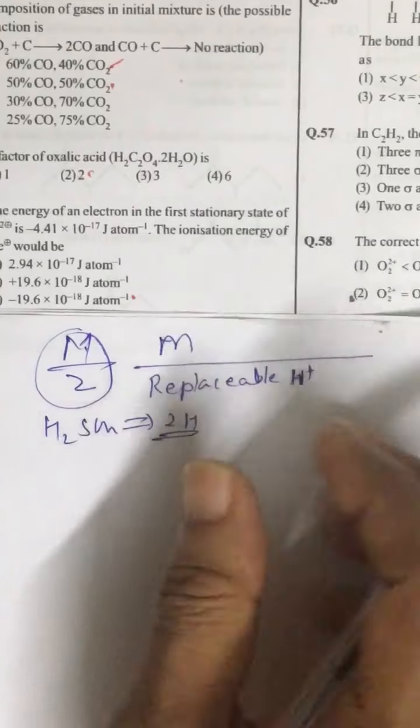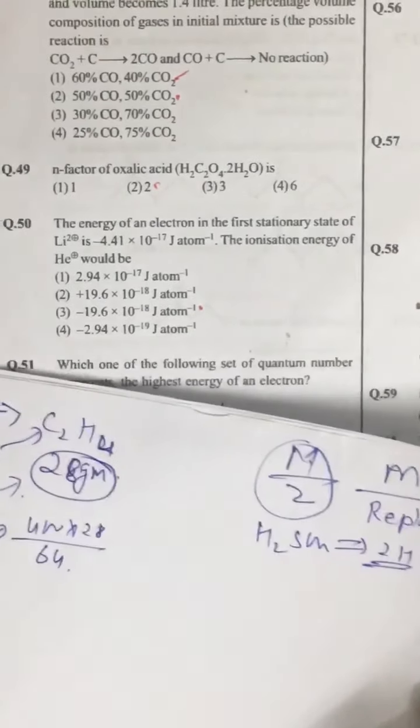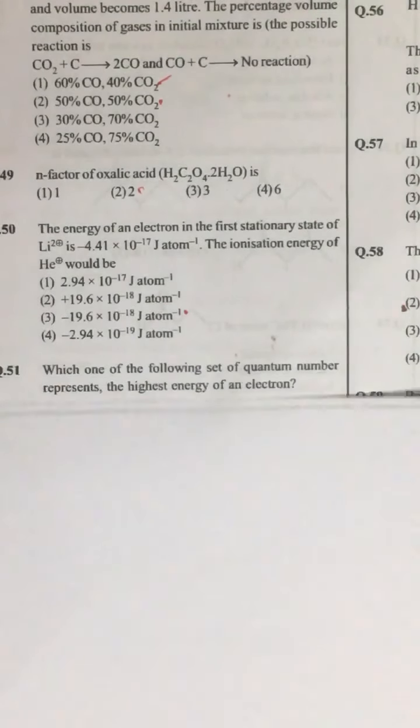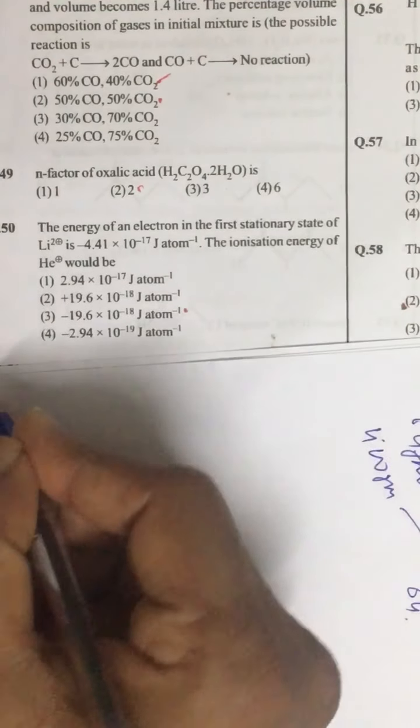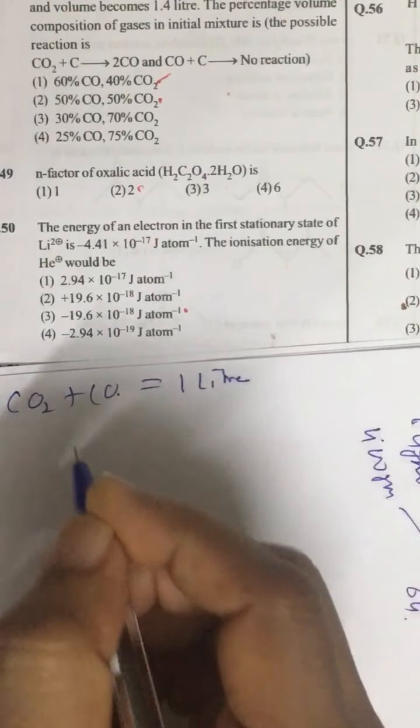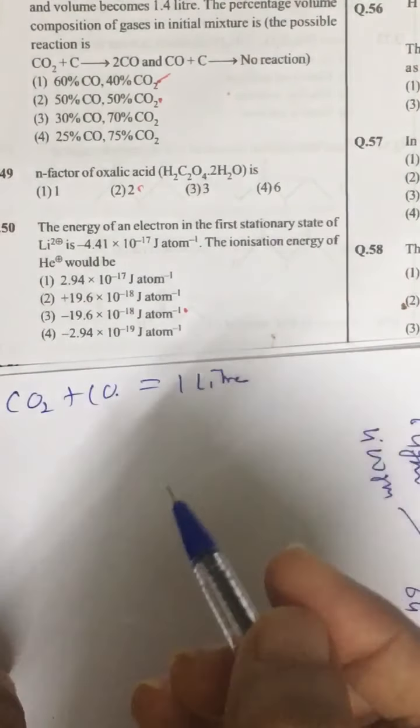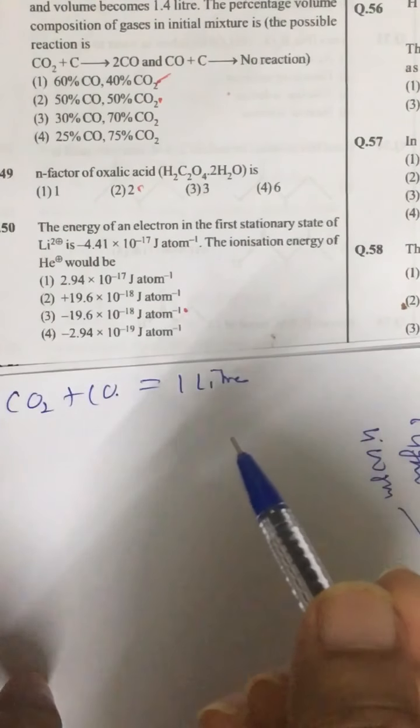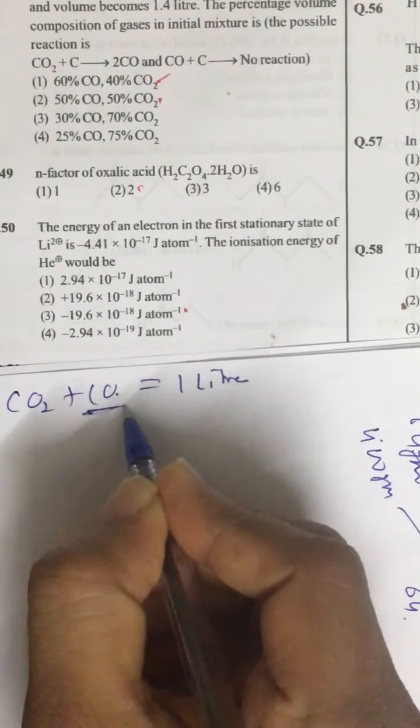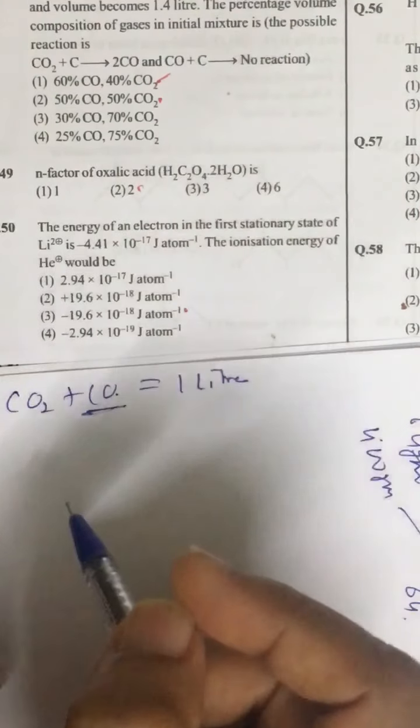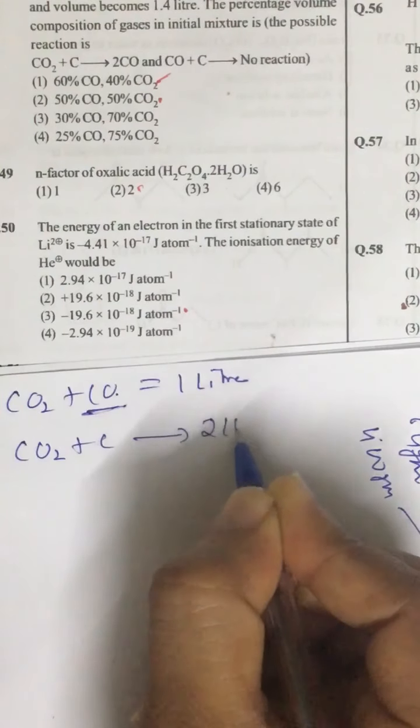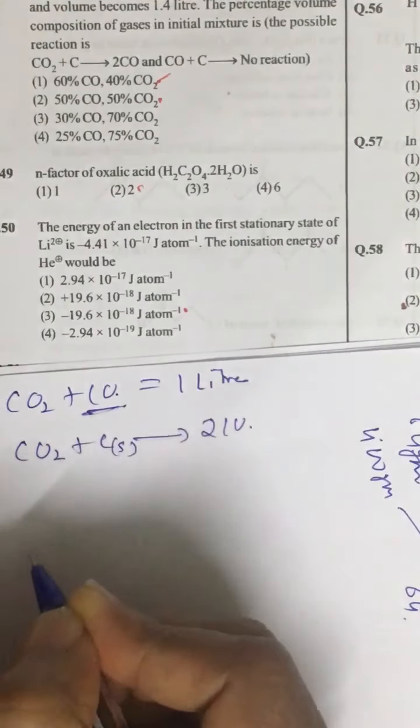Now look at question number 48. In question number 48, we are given a mixture of CO2 and CO. This mixture is 1 liter. And now in this mixture, we are adding charcoal and the total volume becomes 1.4 liters. So the point is carbon monoxide is unaffected. It is mentioned. Only carbon dioxide combined with carbon to produce twice of CO. This is in solid state. Carbon is in solid state.